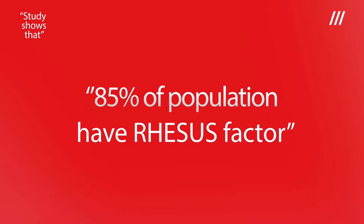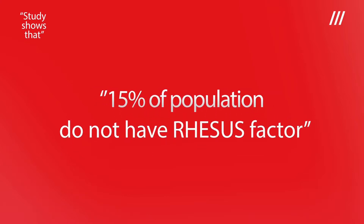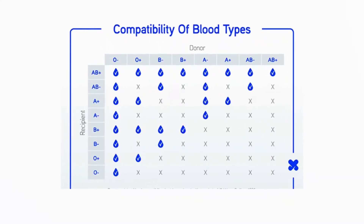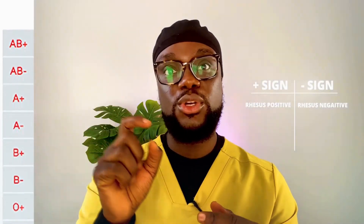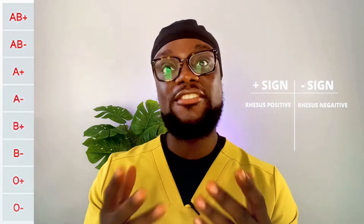This Rhesus factor determines whether Rhesus disease presents in pregnancy or not. About 85% of the population have the Rhesus factor, so about 15% are Rhesus negative. For example, O positive or O negative, A, B positive or B negative — that plus or minus sign is a reflection of your Rhesus status. A positive sign means you have the Rhesus factor; a negative sign means you are Rhesus negative.